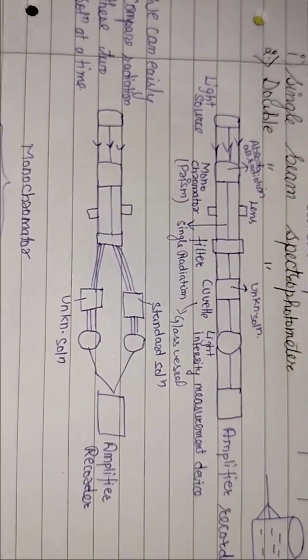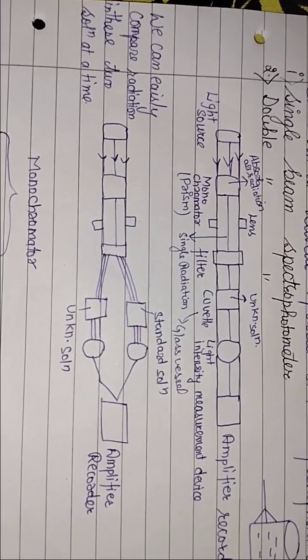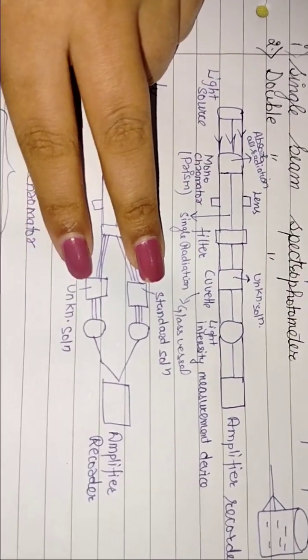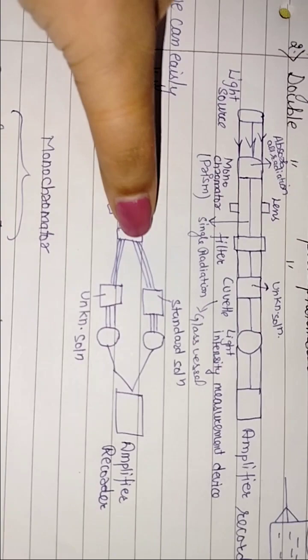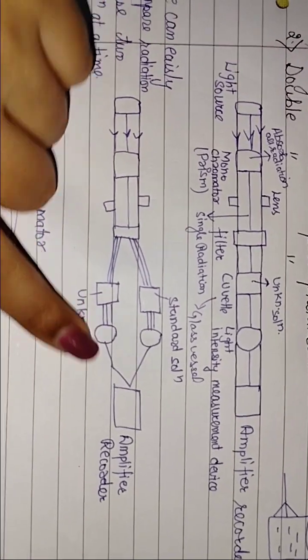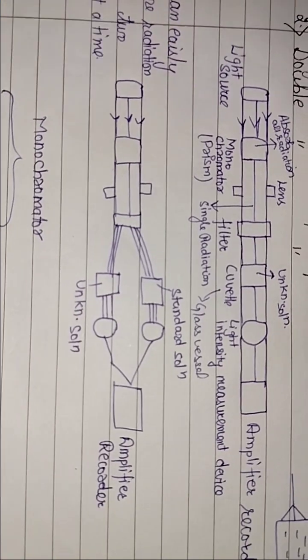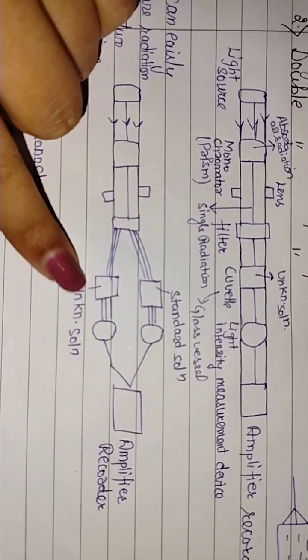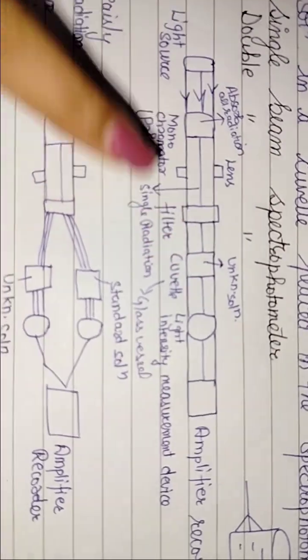If we talk about double, we will easily compare which radiation is more absorbed. We will take standard solution and unknown solution. It will be the same as light source and single beam. Now we will send standard solutions and unknown solutions. We will detect and record. But what happens in double beam? We will not waste time. At the same time, we can check the absorption of both solutions. But in single beam, we will perform the experiment again. Time will be wasted.